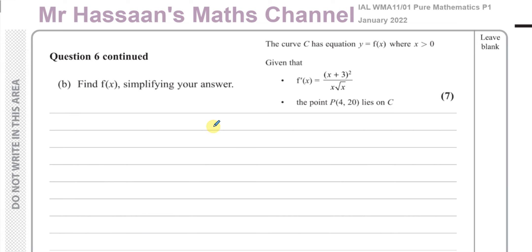Part B says: find f of x, simplifying your answer. They've told us the curve C has equation y equals f of x, which we have to find, where x is greater than 0. The gradient function is (x plus 3) squared over x times root x. They've also told us that point P lies on the curve C, and this point satisfies the equation y equals f of x. So we have to use those facts to find the equation.